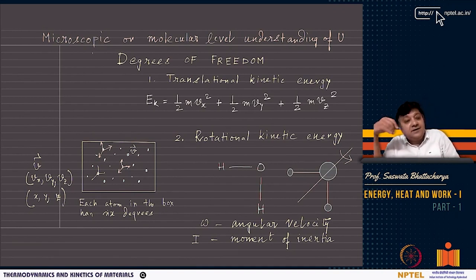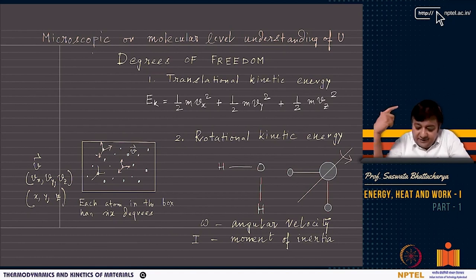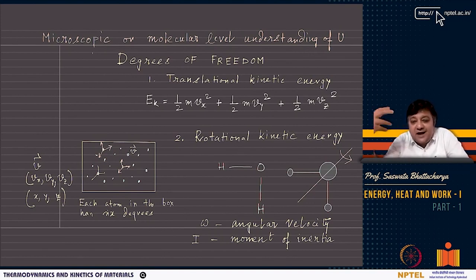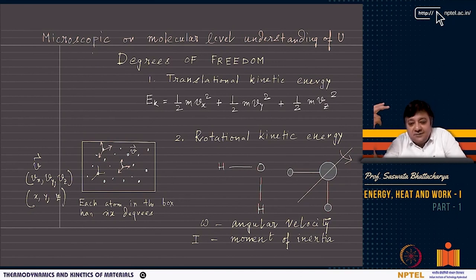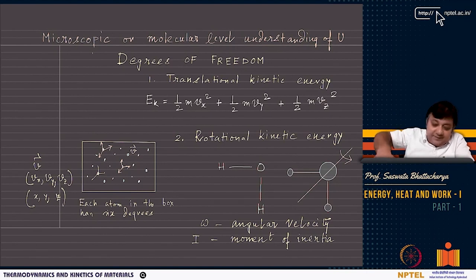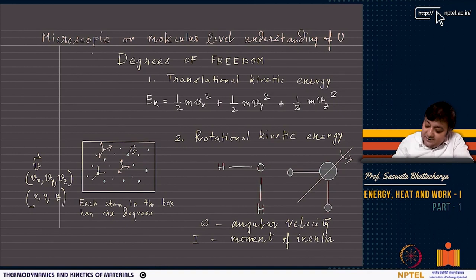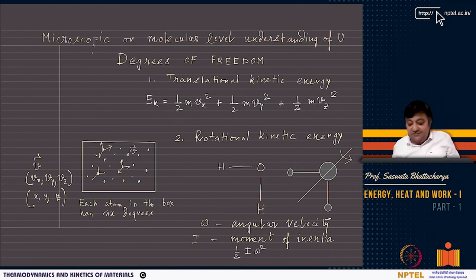Each atom has different degrees of freedom — 6 degrees of freedom or more. For a diatomic molecule like hydrogen, or a molecule like water (2H and 1O), the molecule can also rotate. The rotational kinetic energy is ½Iω², where I is the moment of inertia and ω is the angular velocity.